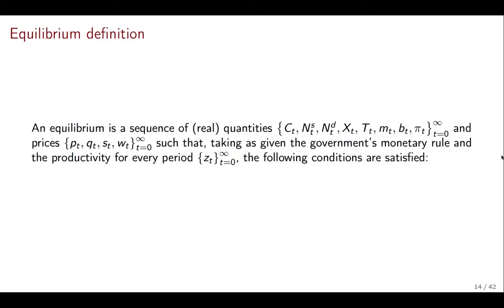And this one I wrote in full and it's going to take some time because it's a bit wordy, but I think it's worthwhile going through it. An equilibrium is a sequence of real quantities. So it's a sequence because we need all the variables in all the periods. And our real quantities are the consumption of the consumers, the labor supply of the consumers, labor demand by the firms, real bonds, taxes, real demand for money, real value of nominal bonds, and profits.